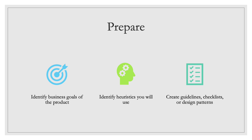To prepare for a heuristic evaluation you really need to do three things. First, you need to identify the business goals of the product — what does the business want the product to achieve? Then you need to identify the heuristics you will use to evaluate the product; in this case we're going to be using a set of ten heuristics. And third, you need to create guidelines, checklists, or design patterns for the product.